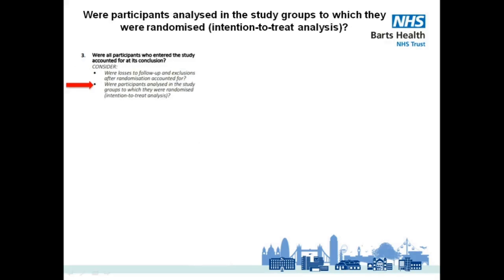This is when intention-to-treat analysis comes in, which is the object of the second point we are asked to consider. In an intention-to-treat analysis, all participants are accounted for in the group they were randomly allocated to at the start of the trial, whether they dropped out or didn't follow the treatment. It preserves the origin of randomisation and consequently avoids potential bias by excluding participants.